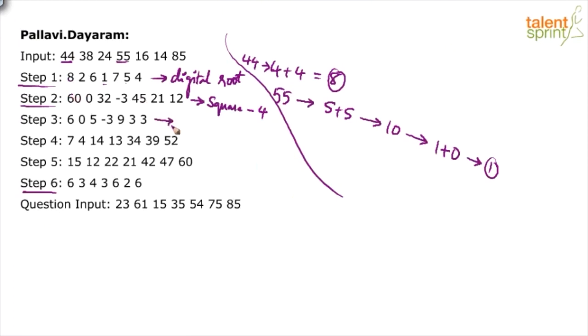Look at step 3 now. Again, similar to step 1, digital roots. Here, we have taken the digital roots again. 6 plus 0, 0, 3 plus 2, 5. Minus 3 is minus 3. 4 plus 5, 9. 2 plus 1, 3. 1 plus 2, 3.